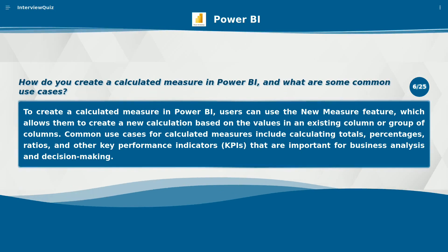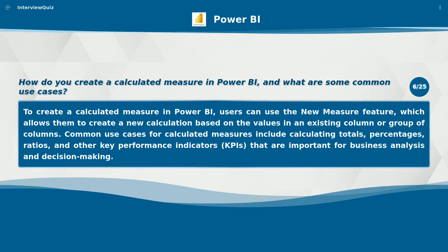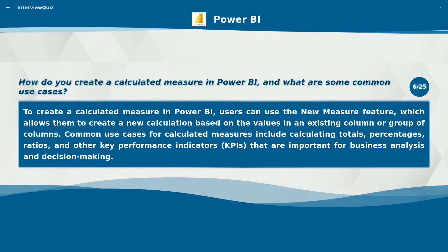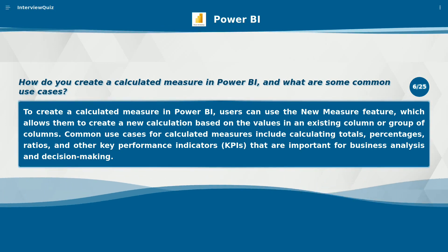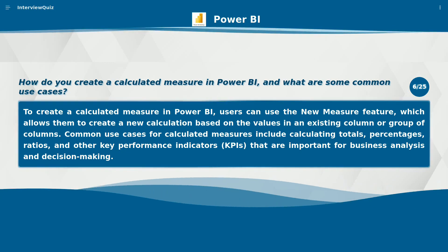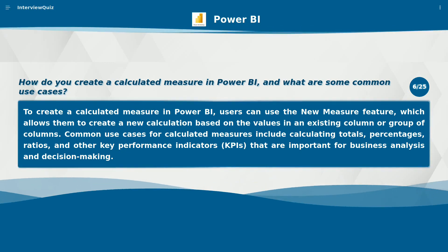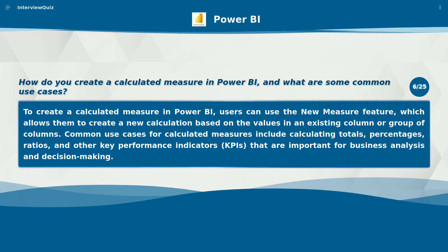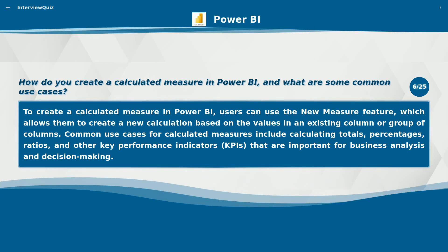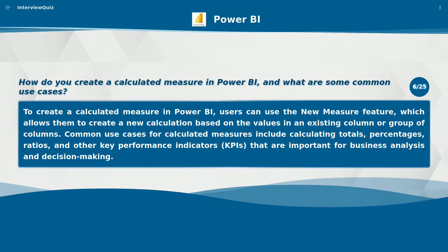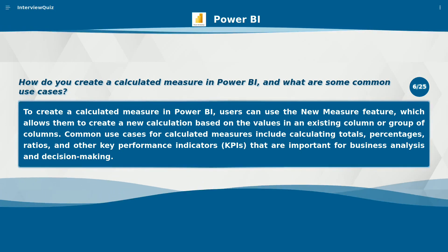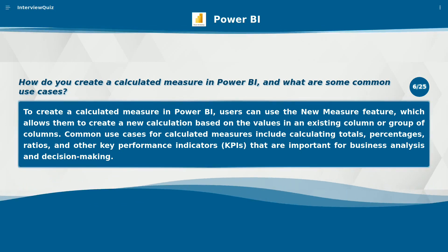How do you create a calculated measure in Power BI and what are some common use cases? To create a calculated measure in Power BI, users can use the New Measure feature, which allows them to create a new calculation based on the values in an existing column or group of columns. Common use cases for calculated measures include calculating totals, percentages, ratios, and other key performance indicators (KPIs) that are important for business analysis and decision-making.